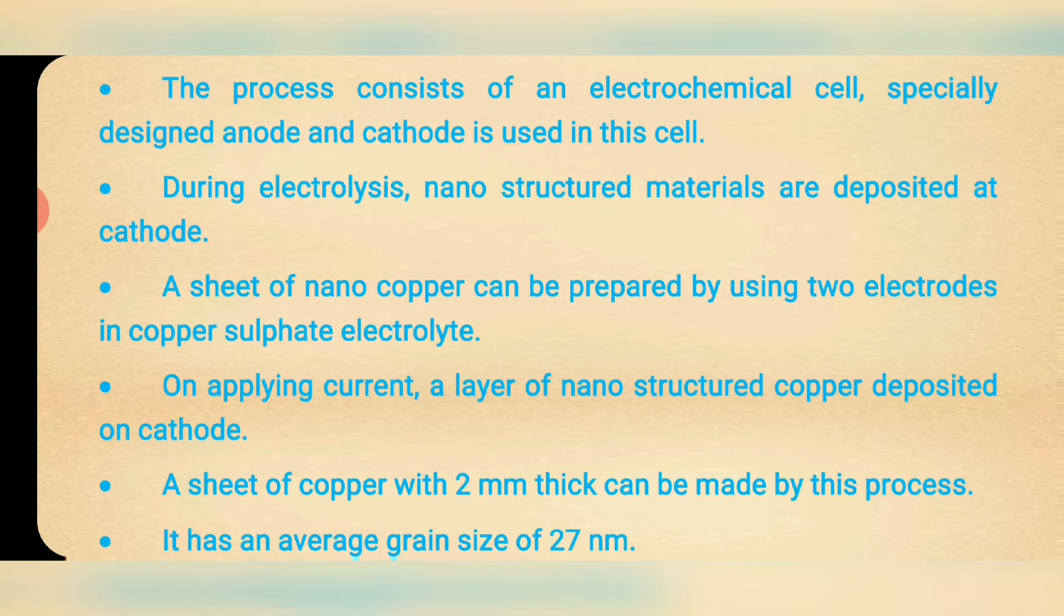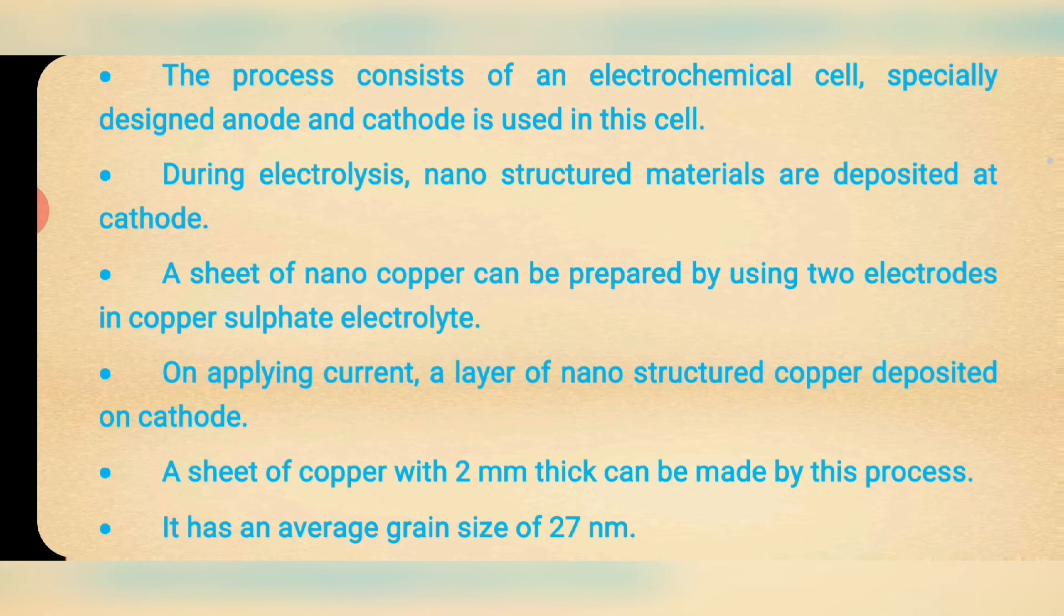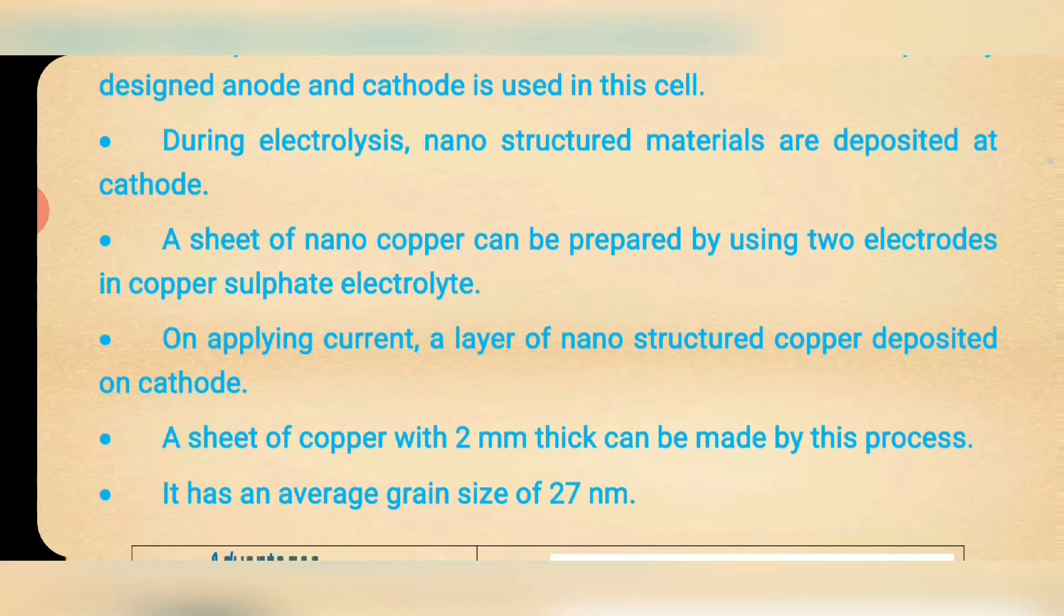A sheet of nano copper can be prepared by using two electrodes in copper sulfate electrolyte. On applying current, a layer of nanostructured copper is deposited on cathode. A sheet of copper with 2 mm thick can be made by this process. It has an average grain size of 27 nanometer.